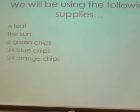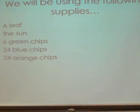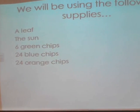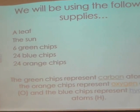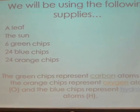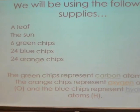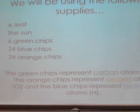We will be using the following supplies. We have a leaf, the sun, six green chips, 24 blue chips, 24 orange chips. The green chips will represent carbon atoms, and that's represented by a capital letter C. The orange chips will represent oxygen atoms, and that's represented by a capital letter O.